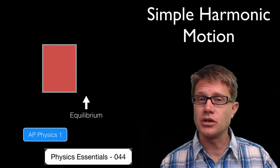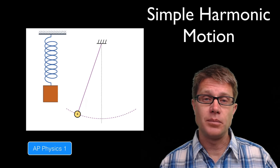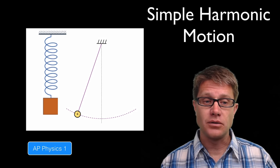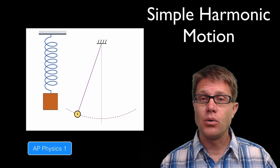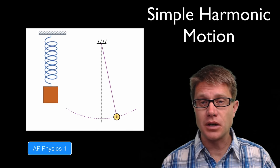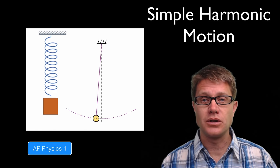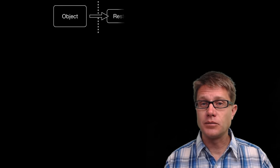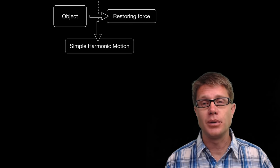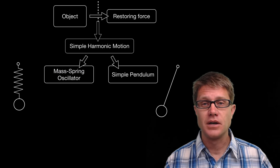What would be an example of this? Pushing a child on a swing. There are really two examples we will do in AP Physics. One is a mass-spring oscillator, which is going to bounce up and down like this. Or a pendulum that is going to swing back and forth like this. Equilibrium is going to be right in the middle, but these restoring forces continue to bring it back towards equilibrium. If you have an object moving towards equilibrium based on restoring forces, we call that simple harmonic motion.